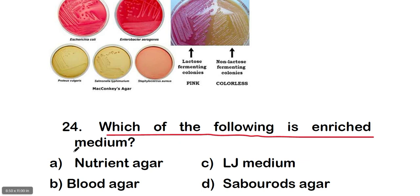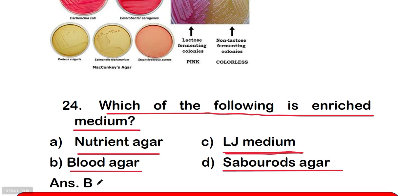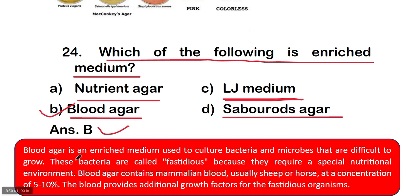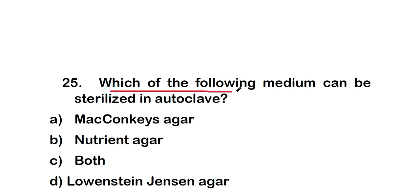Question 24: which of the following is an enriched medium? Option A: nutrient agar, B: blood agar, C: LJ medium, D: Sabouraud's agar. The right answer is option B — blood agar is an example of enriched medium. Blood agar is used to culture fastidious bacteria that require special nutritional environments. It contains mammalian blood, usually sheep or horse blood, at 5–10%, providing additional growth factors for fastidious organisms.